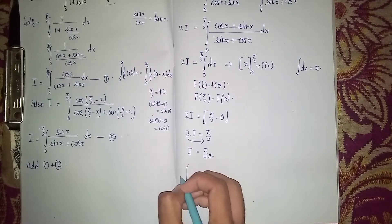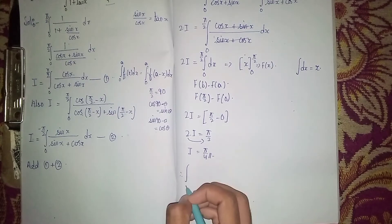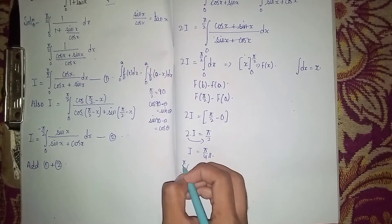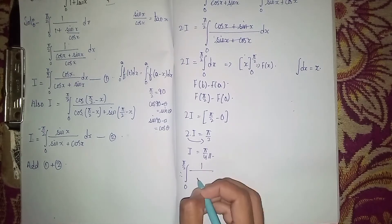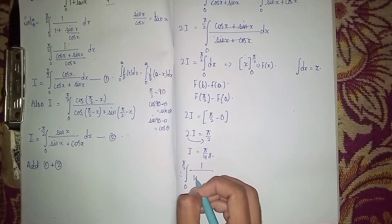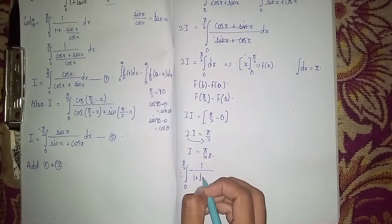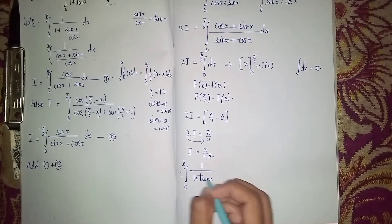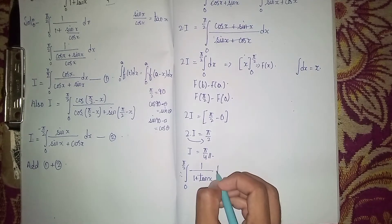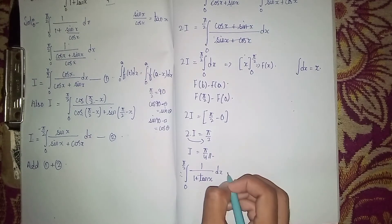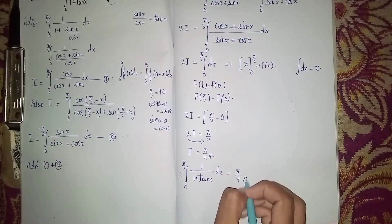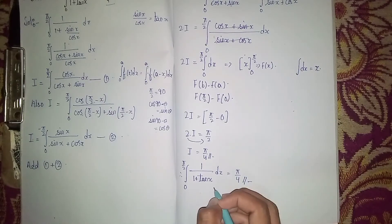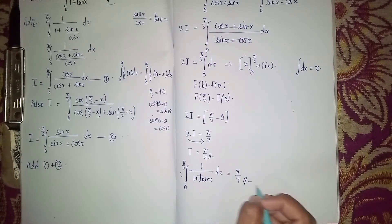Therefore, the integral from 0 to π/2 of 1/(1 + tan x) dx equals π/4. This is our answer — LHS equals RHS. Thanks for watching.